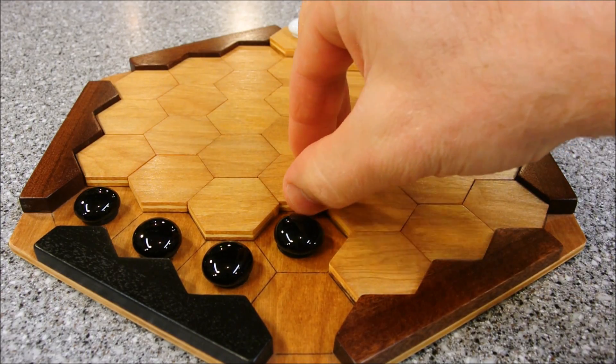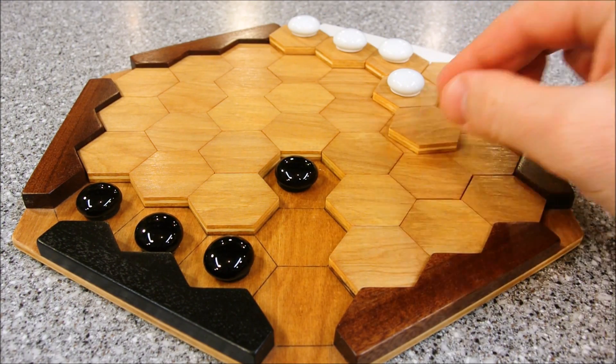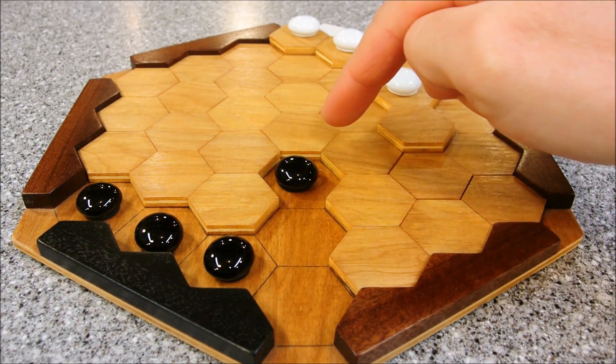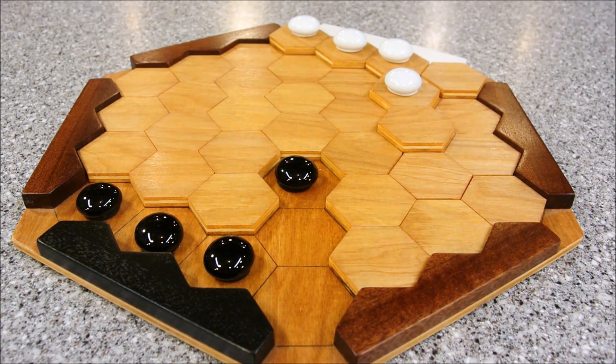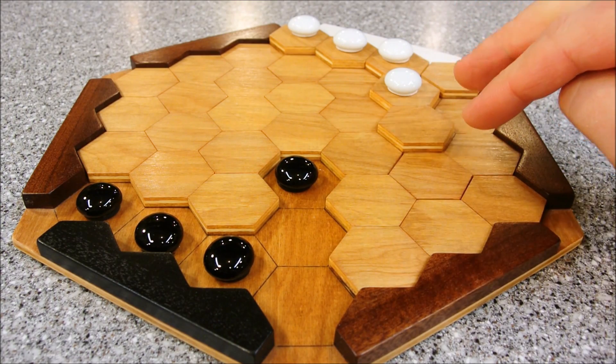So when it's your move, you can move one tile and one piece, and the object of the game is to get to the opponent's base. Oh, and you can also capture the opponent's pieces if you surround them on two sides.